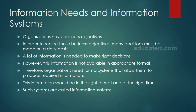So, information needs and information systems. Let us understand what is information, what are its needs, and what are information systems. Normally, organizations have business objectives. In order to realize those business objectives, many decisions must be made on a daily basis. A lot of information is needed to make right decisions. However, this information is not available in appropriate format. Therefore, organizations need formal systems that allow them to produce required information in the right format and at the right time. Such systems are called information systems.